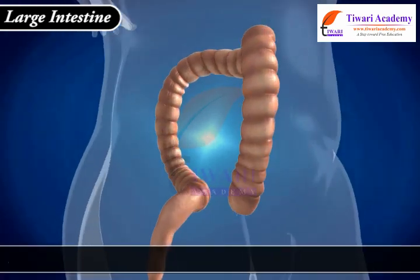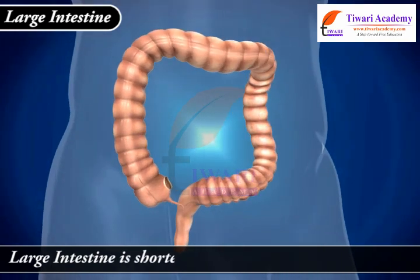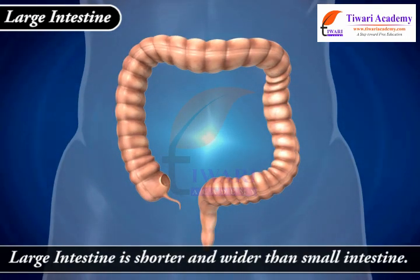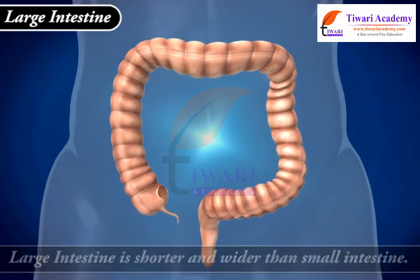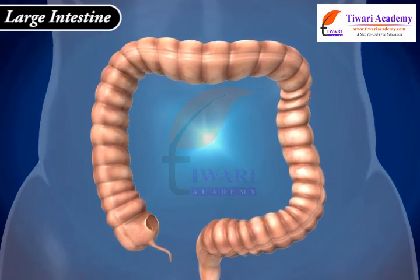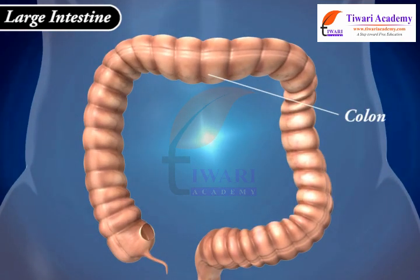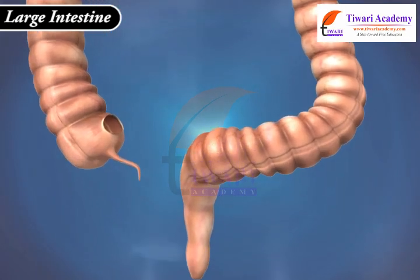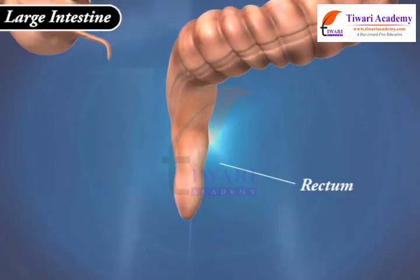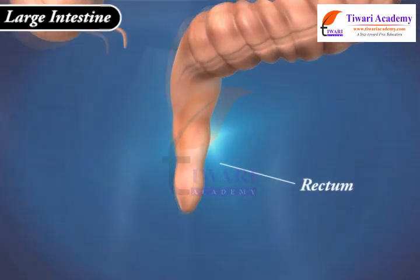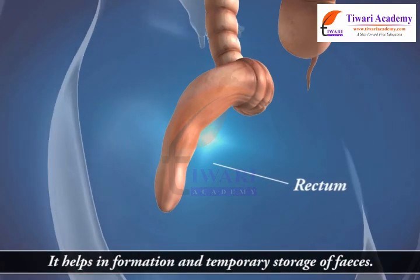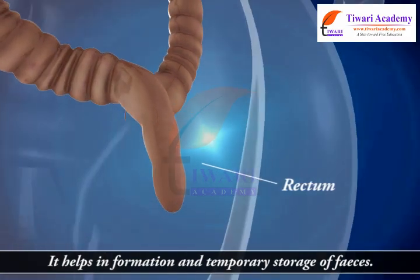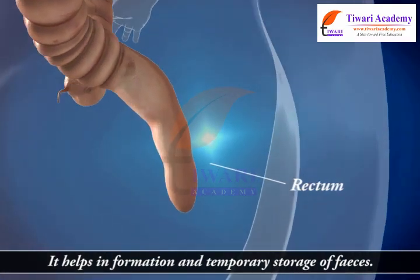The large intestine is shorter and wider than the small intestine. It is divided into the colon and the rectum. It helps in the formation and temporary storage of feces.